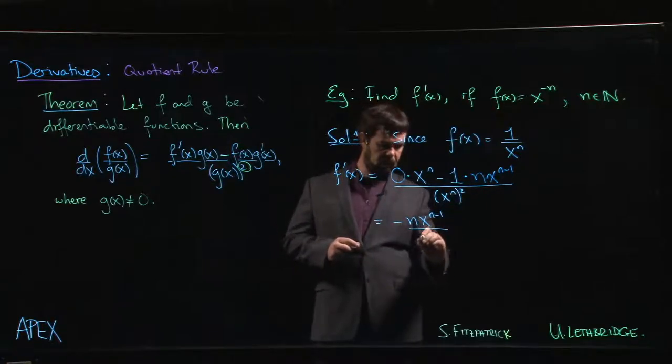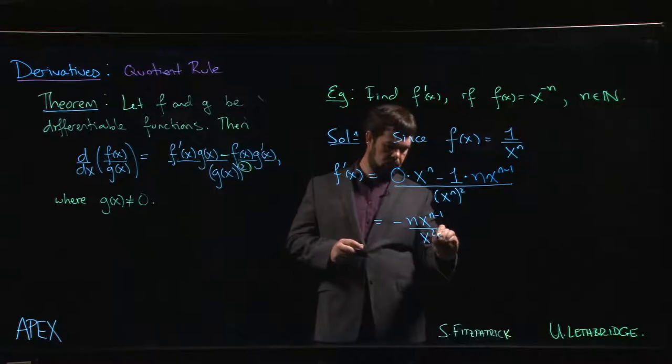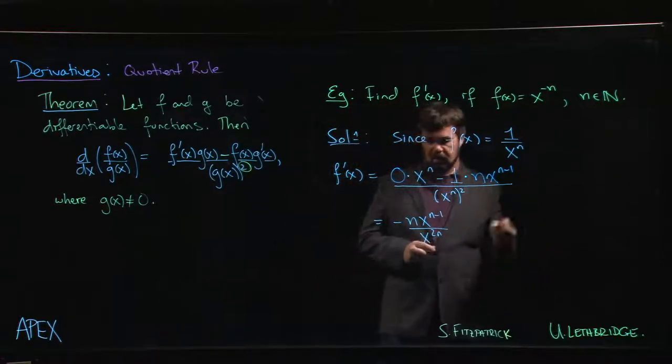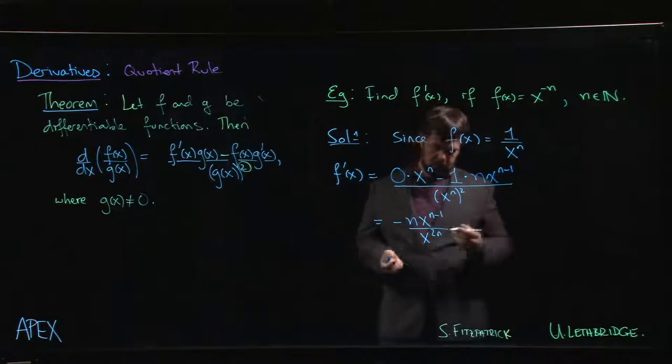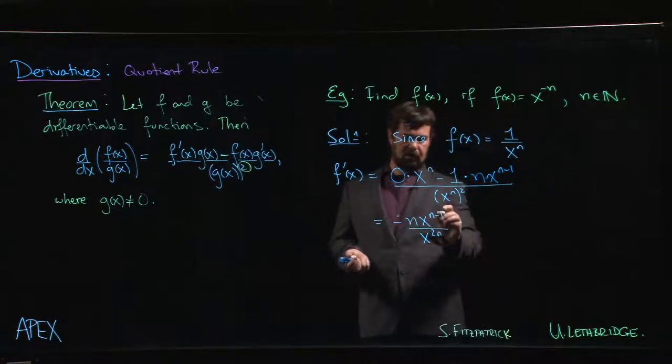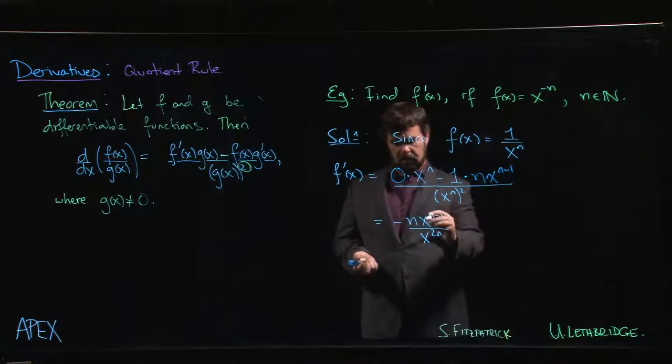...well, x to the n squared becomes x to the 2n. x to the n times x to the n, n plus n gives us that 2n. I've got a ratio of powers. We never leave things like this, we simplify. We know that if you have a ratio of two powers, you can subtract the exponents.